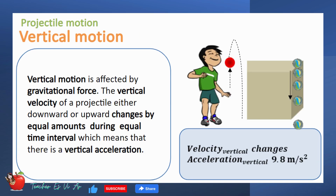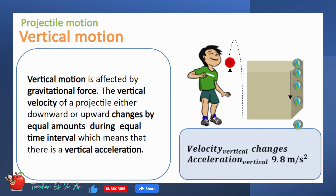On the other hand, vertical motion is affected by gravitational force. The vertical velocity of a projectile, either downward or upward, changes by equal amounts during an equal time interval, which means that there is a vertical acceleration.